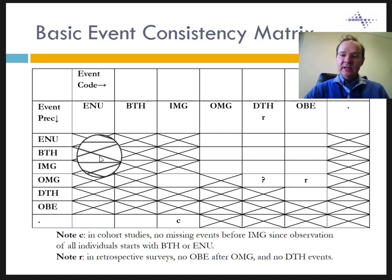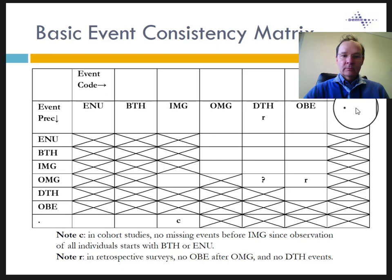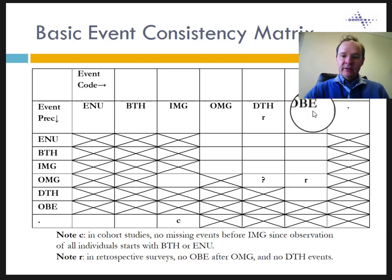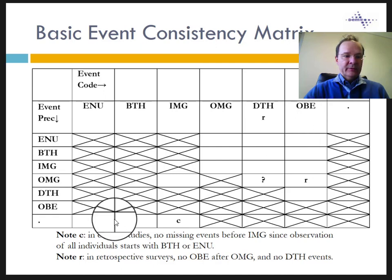As you can see, there are many non-logical sequences. The column of missing values, marked with a dot, applies to the last record for a particular individual. This column should not appear in the table, because all sequences should finish with an OBE — the end of observation. Consequently, the line for OBE should not appear in the matrix either, since there should be no record after an OBE.